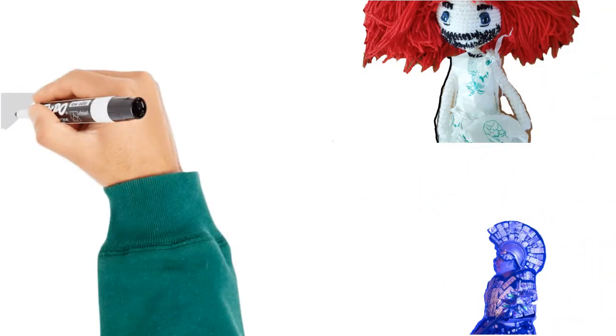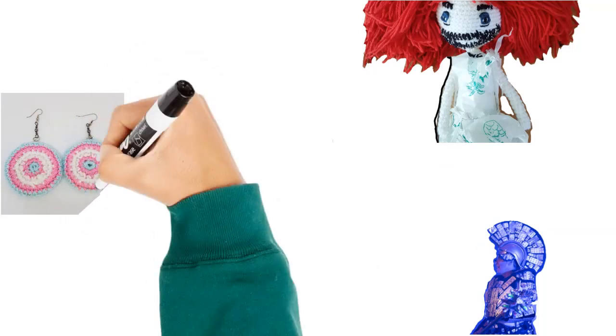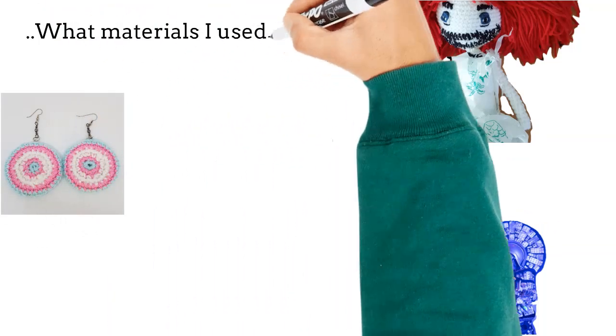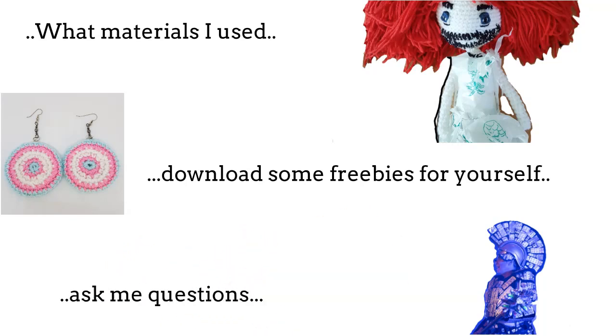It's gone to a new scene and the hand is drawing a crocheted version of Zap Back Again, a drag king and a person wearing a pill packet costume, some transgender earrings. It's saying what materials I use, download some freebies for yourself, ask me questions.